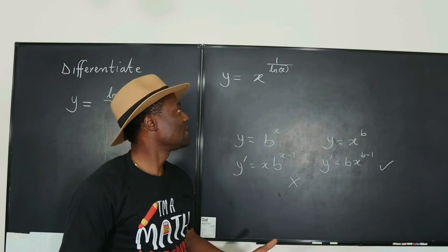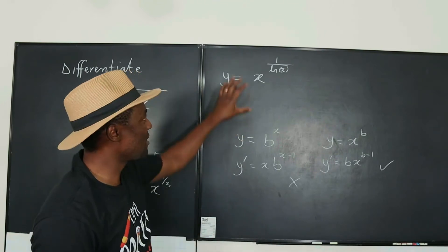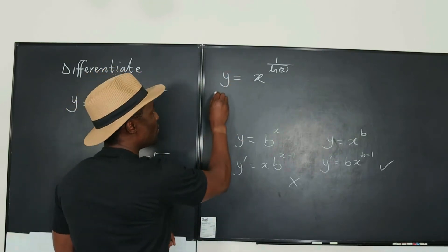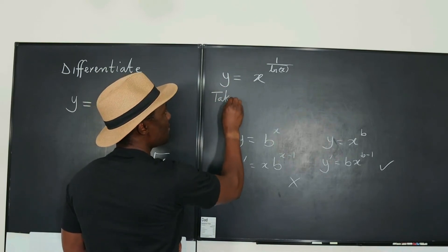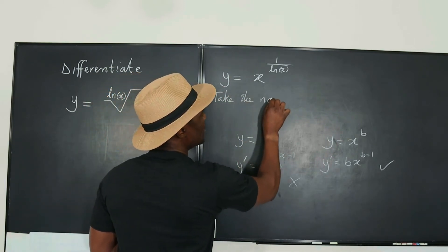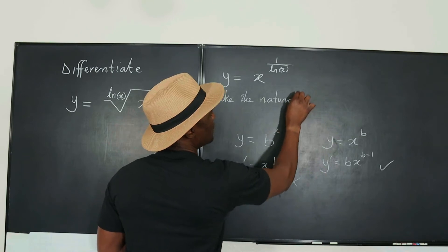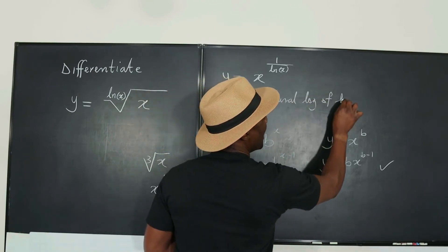Natural logs would be your safest path to follow. So let's apply that here, introduce natural log. So we're going to say take the natural log of both sides.